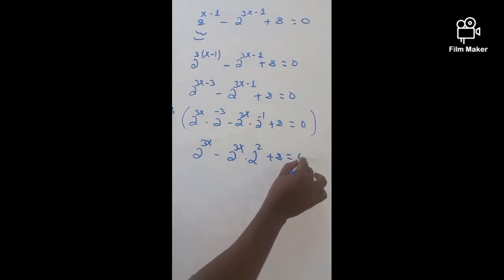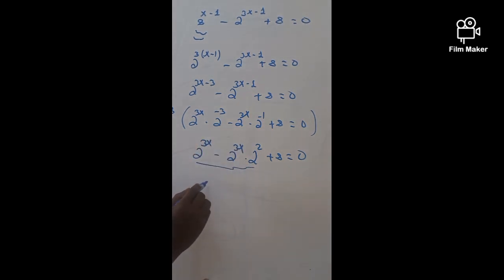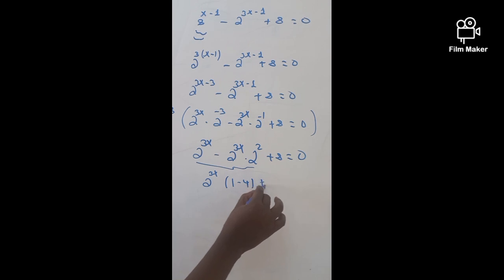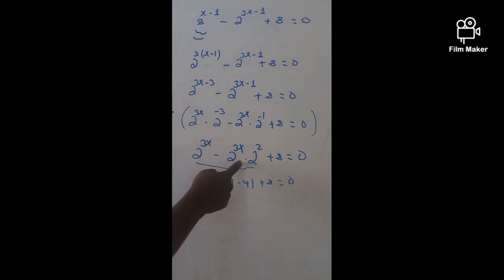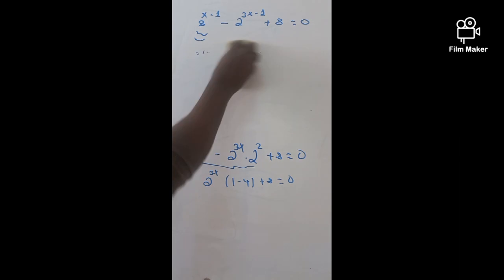Plus 8, that is going to be 0. If you come to here, now they have the same common factor, and it is going to be 2 raised 3X into 1 minus 4, plus 8, which is going to be 0. Because when we take out 2 raised 3X, what's left here is 1. What's left here is 2 raised 2, and 2 raised 2 means 4. So, this is how to simplify this value.